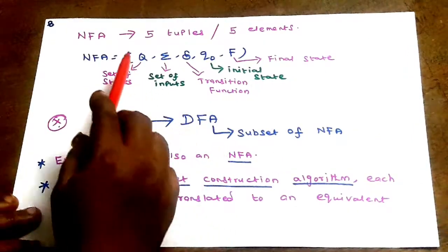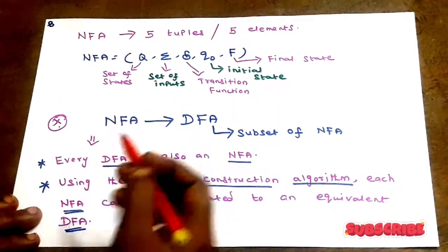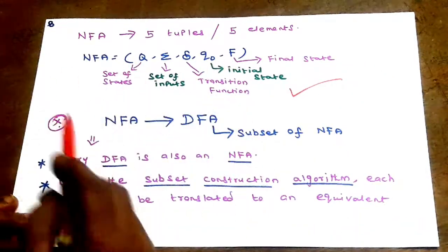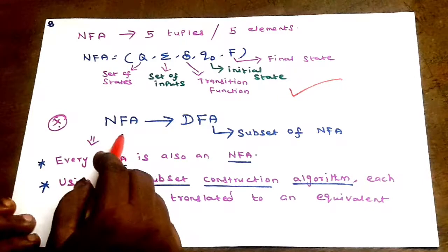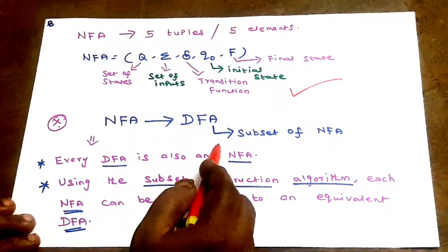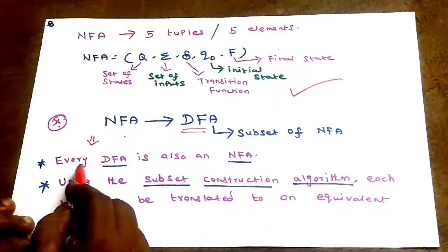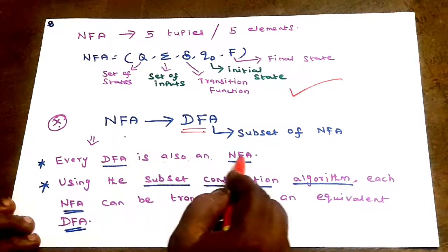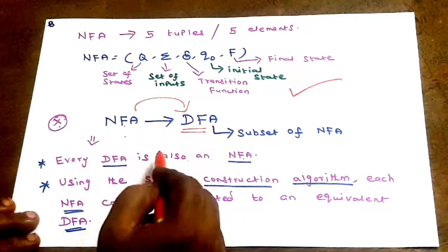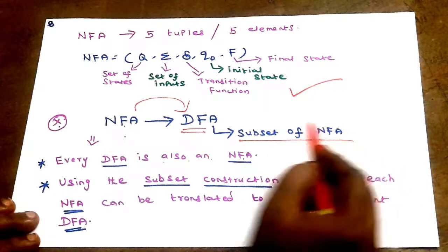NFA also consists of five tuples or five elements. NFA can be minimized to DFA. DFA is a subset of NFA, meaning every DFA is also an NFA.